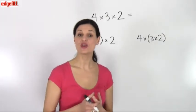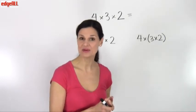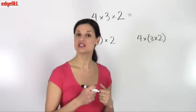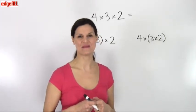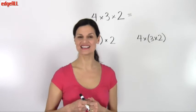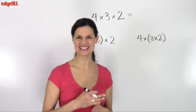In other words, if you are multiplying many numbers together, it does not matter what order you multiply them. The answer or the product will always be the same.